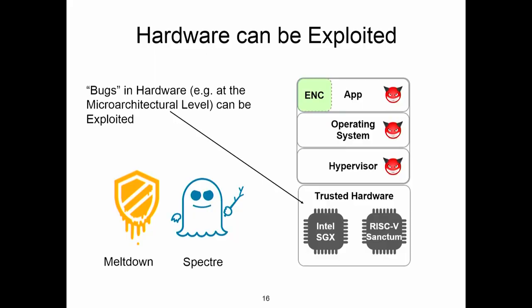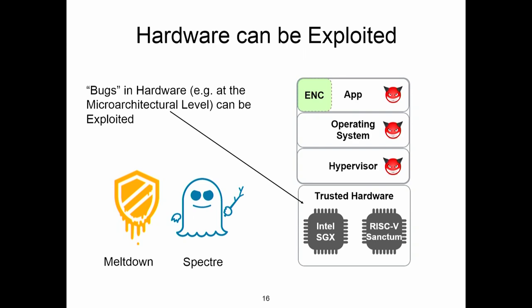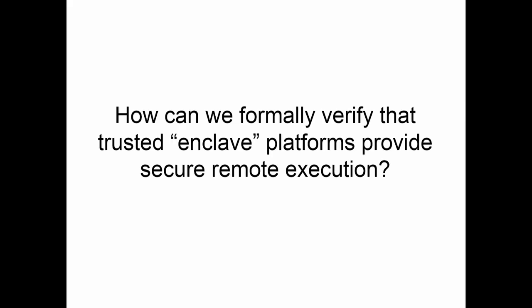About two years ago there was big news that certain classes of processors — quite a wide set — can be exploited. Common microarchitecture features implemented and taught for decades, like speculative execution, can be exploited. We had the news of the Spectre and Meltdown bugs. At the hardware level, you want to make sure that a platform claiming to provide secure computing with enclaves is robust against this sort of attack.